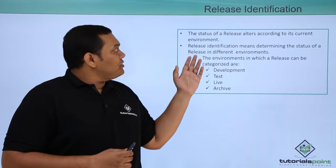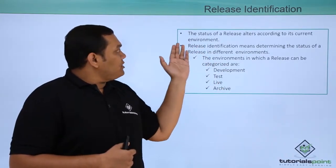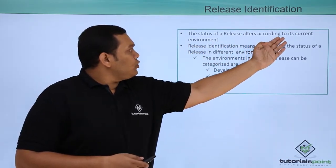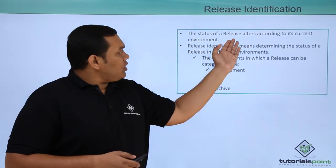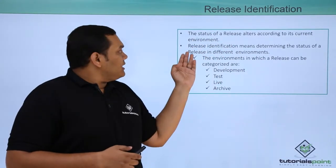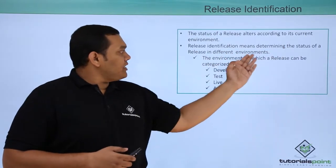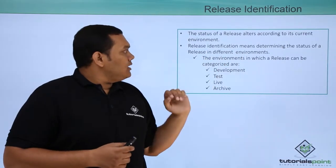Coming to release identification. How can a release be identified? By which status? The status of a release alters accordingly to its current environment. Release identification means determining the status of a release in different environments, and based on the environments, the statuses are provided for the services.